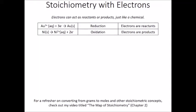In this video we're going to take a closer look at how we can do stoichiometry with electrons. The upshot of all of this is just that electrons can act as reactants or products just like a chemical. So any of the rules that you've already learned about doing stoichiometry with molecular compounds, you can just plug electrons in as if they were a chemical.